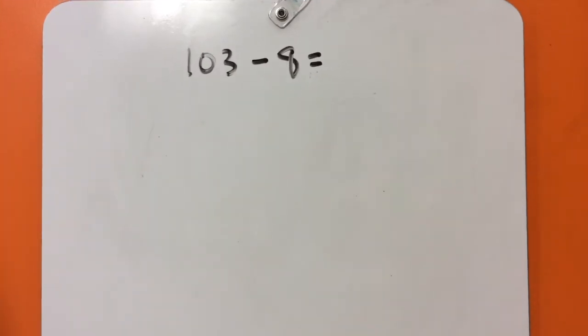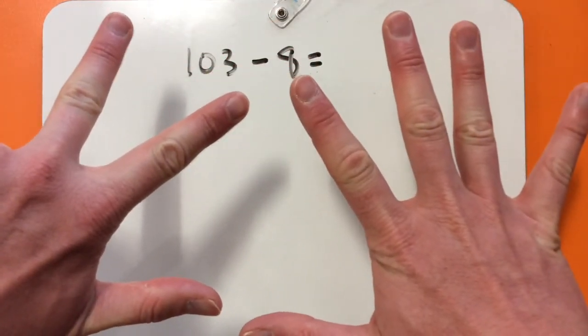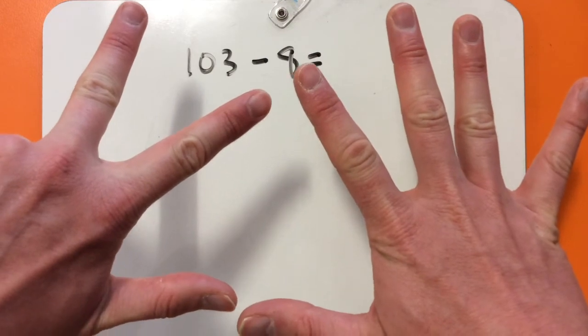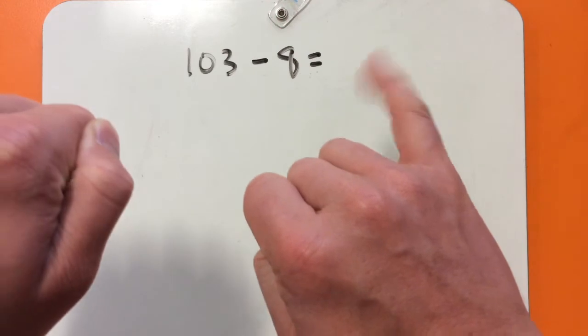For this problem, let's use just our fingers. So, let's put 8 on our hands, 103 in our heads, so 103, 102, 101, 100, 99, 98, 97, 96, 95.